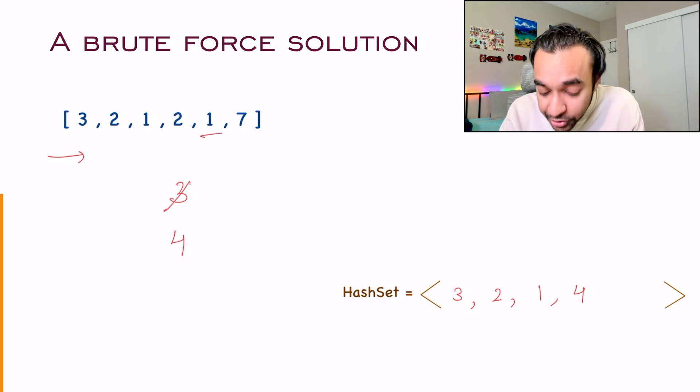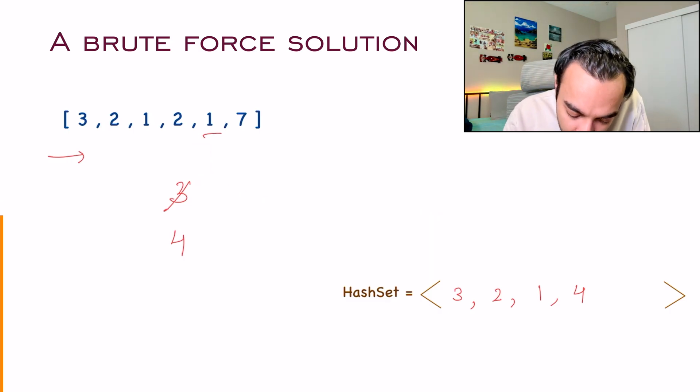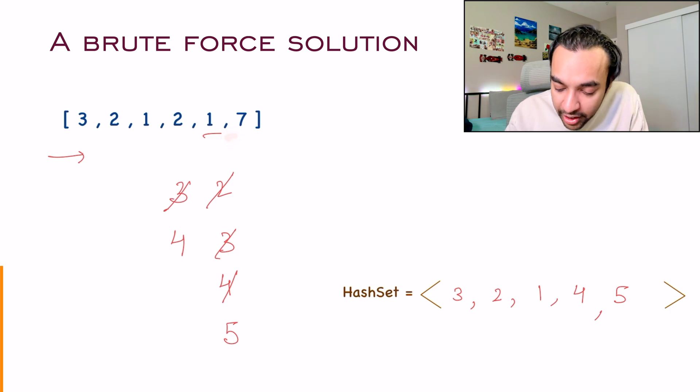Moving ahead, you see a 1 again. 1 already exists in your hash set. So once again, you'll try to increment 2, 2 also exists. 3, 3 also exists. 4, 4 also exists. And then you have a 5. So you can now add 5 to your hash set. And then finally, you can add a 7. You can see that this approach works over here, but there's a certain problem.